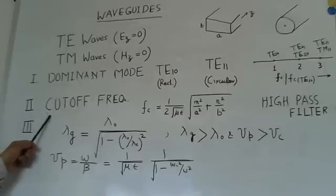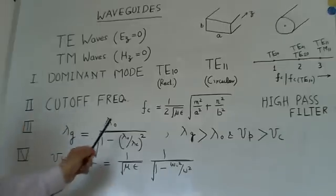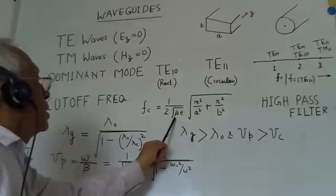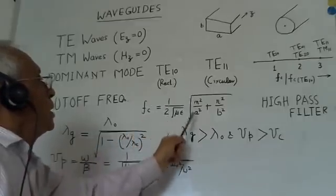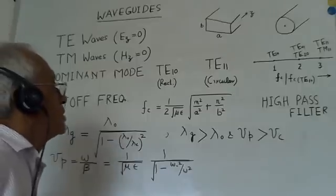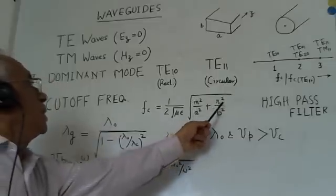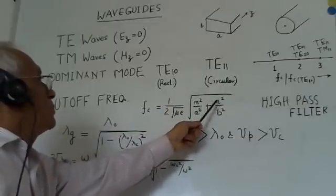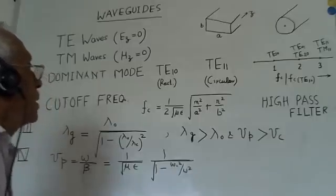Now, this relation gives me the cutoff frequency. Fc, the cutoff frequency, one over two under root mu epsilon, under root of M square by A square plus N square over B square. M and N are the eigen numbers. One is related to the wide dimensional waveguide, other is with the narrow dimension. A and B are the wide and narrow dimension of a waveguide.